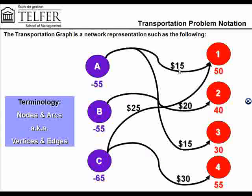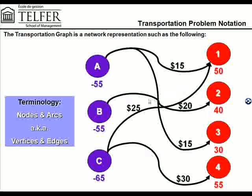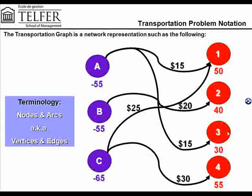Along the arcs or edges on the diagram, you're also shown the cost of transportation per unit. So it costs 15 units to transport materials from supply point A to demand point 1. Similarly, it costs $20 per unit of transportation from supply point B to demand point 2, and so on. That's the second notation that is very commonly used in transportation problems.